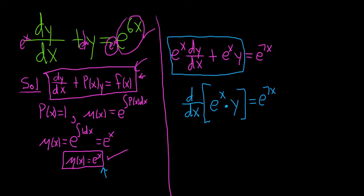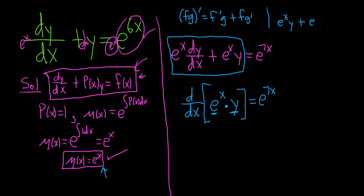You might ask what happened to the left-hand side. Recall the product rule: the derivative of f times g is the derivative of the first times the second plus the first times the derivative of the second. The derivative of e to the x is e to the x times y, plus e to the x times dy/dx — that's exactly what we had, so this always works.